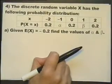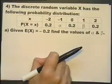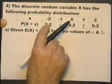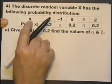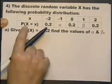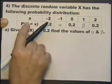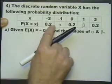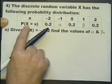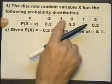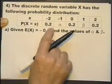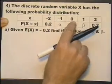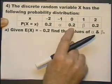The discrete random variable X has the following probability distribution. The probability that X takes the value of minus 2 is given, the probability it takes the value of minus 1 is alpha, the probability it takes the value of 0 is 0.2, and so on.